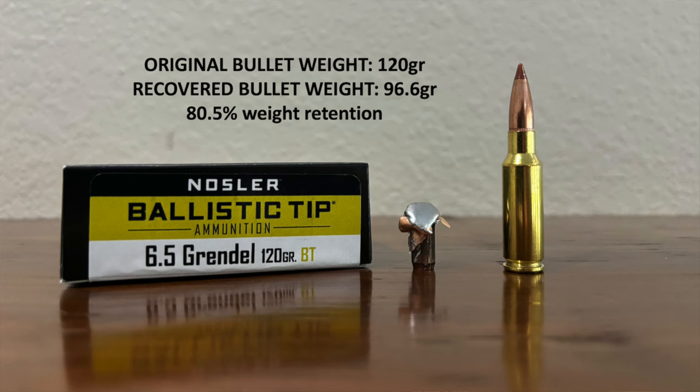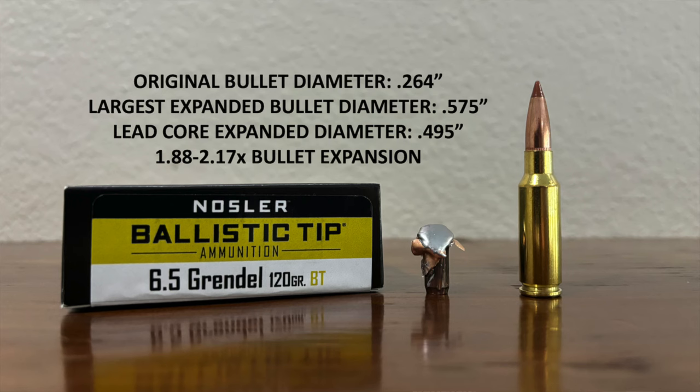Okay I pulled that bullet out of the gel block. Original bullet weight 120 grains. I put this one on the scale it weighs 96.6 grains. So it shed about 20% or almost 20% of its original mass. Original bullet diameter 0.264 inches. This one now measures 0.575 inches. That's just over 2x bullet expansion. About 2.17x to be exact.